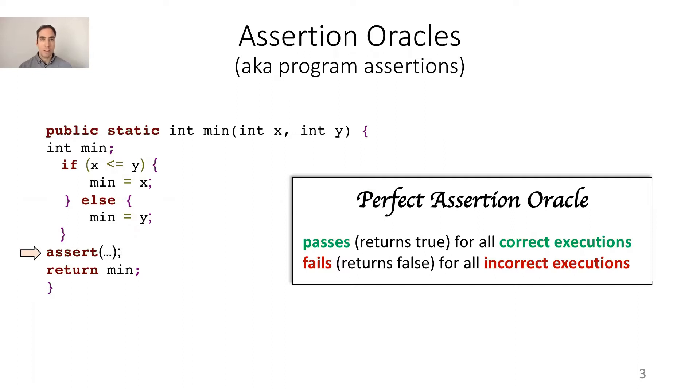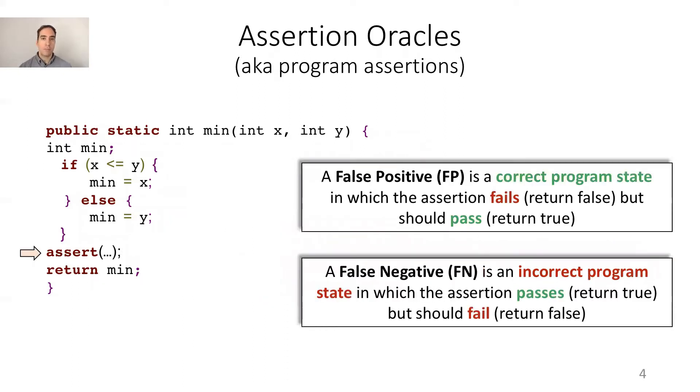We say that an assertion oracle is perfect if it returns true for all correct executions and returns false for all incorrect executions. Manually designing or automatically generating a perfect assertion oracle is very difficult, and that's why they often suffer from both false positives and false negatives. A false positive is a correct program state in which the assertion fails but should pass, while a false negative is an incorrect program state in which the assertion passes but should fail.